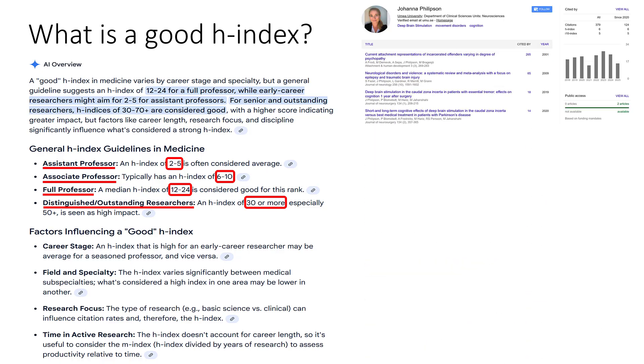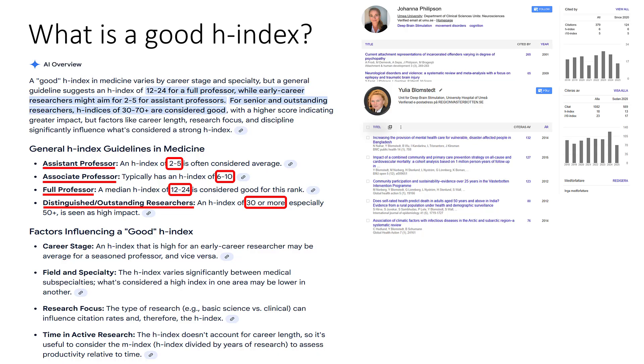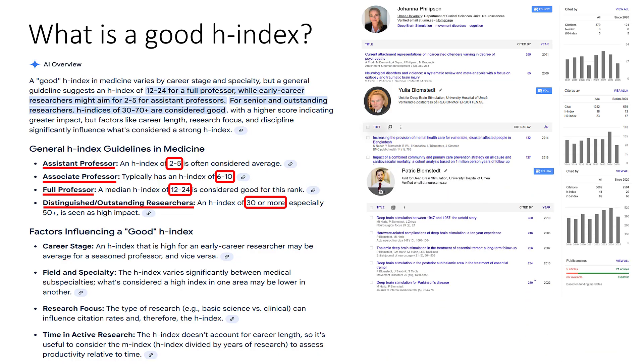Just as an example from my own department, Johanna has an H-Index of 6. She has just finished her PhD and is ready to become assistant professor. My wife has an H-Index of 18 and is associate professor. While I myself have been full professor for 13 years and have reached an H-Index of 41,